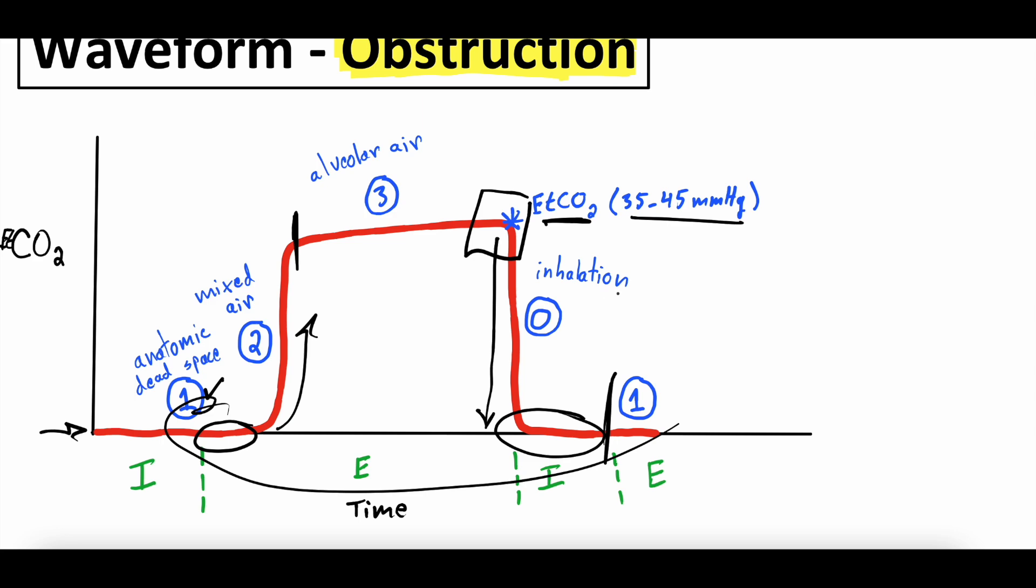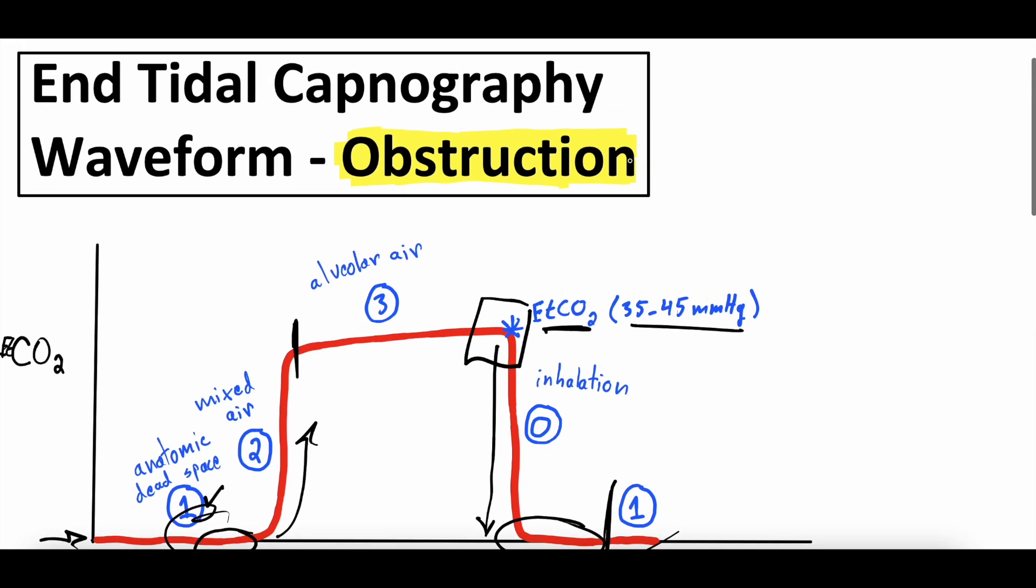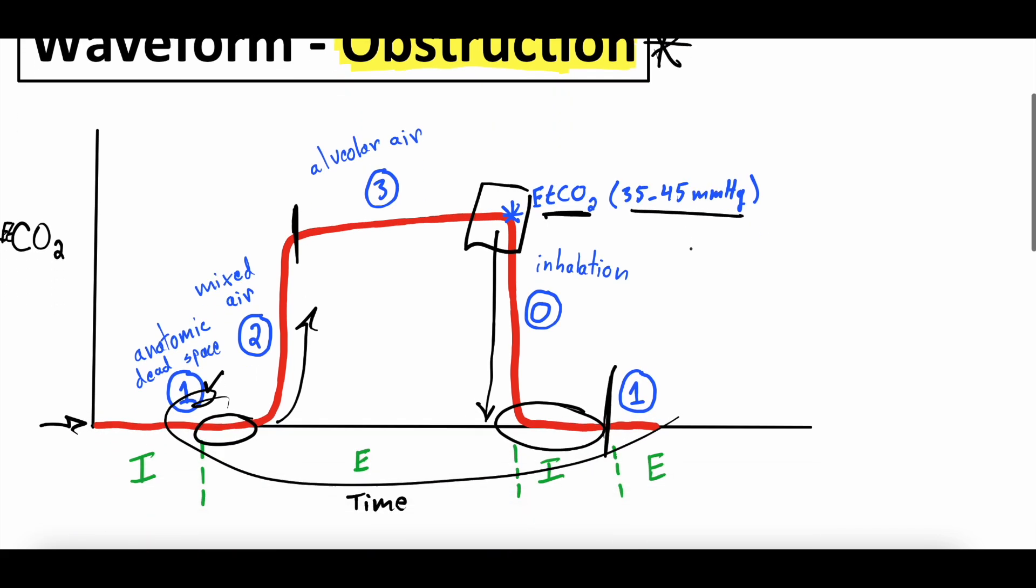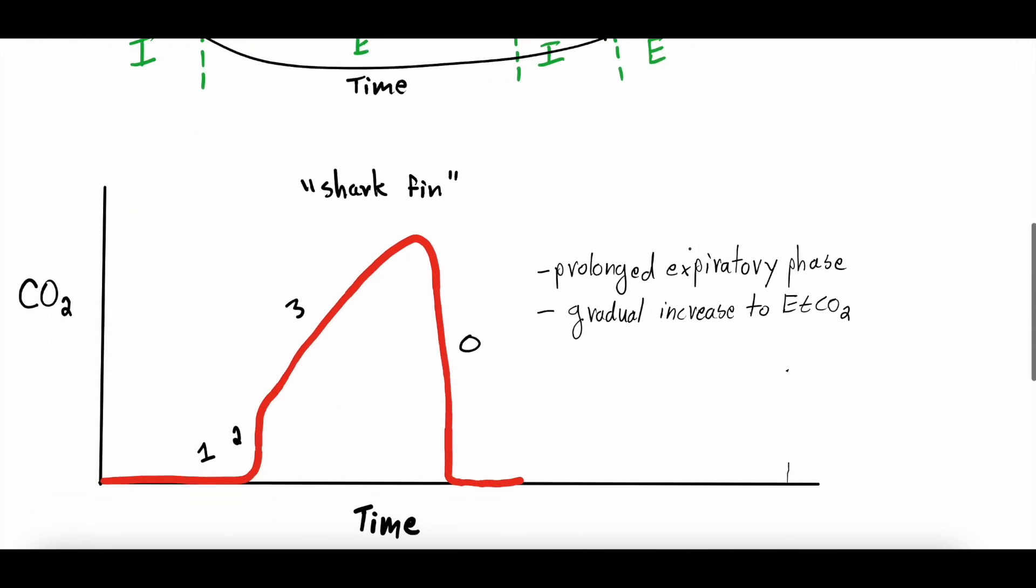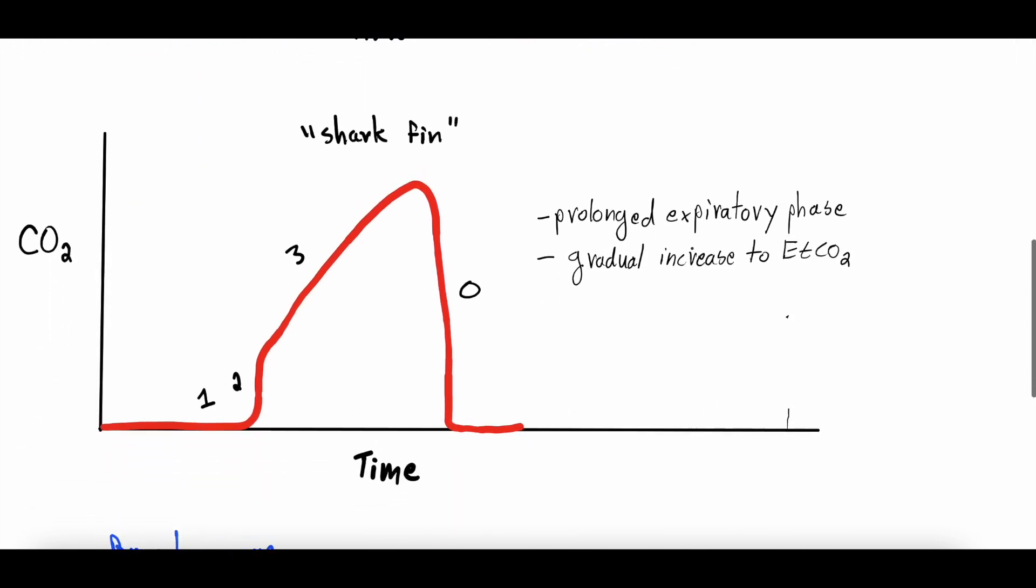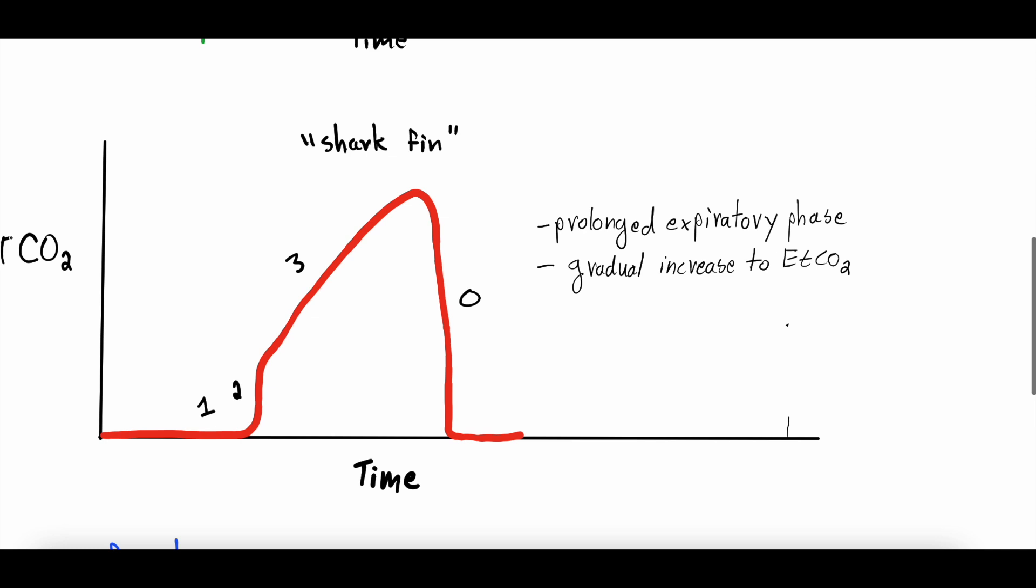But as we mentioned, today we're going to be talking about the abnormal, particularly obstruction. So end-tidal waveforms are nice because they can give you a lot of insight into different pathophysiology going on. And this is one of the classical pathophysiologic end-tidal waveforms you might see. And this waveform represents, as we mentioned, obstruction.